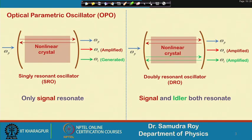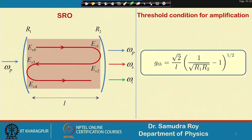Going back to the slides on the DRO process, we have a schematic figure of the optical parametric oscillator. The left-hand side shows how the singly resonant oscillator works — one wave at frequency omega_s oscillates inside the cavity, producing one amplified wave omega_s. In the doubly resonant oscillator, two different frequencies — signal and idler — both resonate simultaneously. Our goal today is to find the threshold condition.